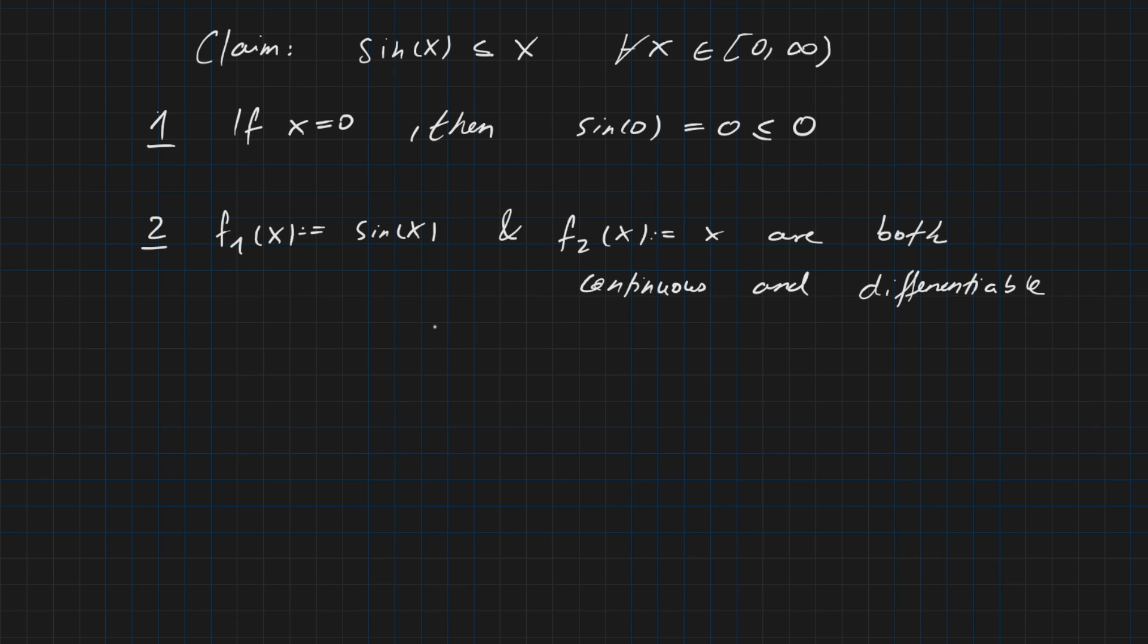Now here comes the most important point. You can take the first derivative of f₁(x), which is cos(x), and you can do the same for f₂(x), which is just 1.